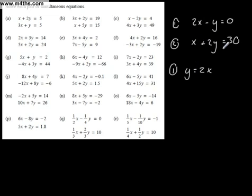In the second equation, x plus 2y, well y is 2x, so I'm going to have 2 lots of 2x equals 30. x plus 2 lots of 2x is 5x equals 30. x equals 6.